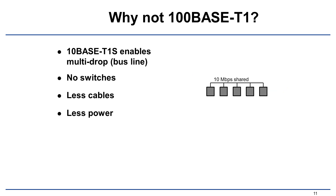But there is 100Base T1 out there, so why not use 100Base T1? The big advantage is that 10Base T1S enables multi-drop. Multi-drop means a bus line, as you can see in the image on the right. So you don't need switches, you have less cables and less power.